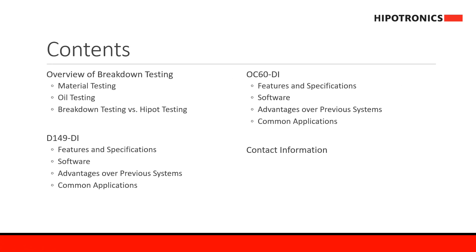First, we'll go over a small overview of the breakdown testing for material and oil, and then we'll compare breakdown testing versus HIPO testing. We'll then go over the D149 DI features and specifications, show a preview of the software screens that come with the system, as well as the advantages of the new D149 DI series over its predecessors. I'll then mention some of the applications that can be done with the D149 DI.